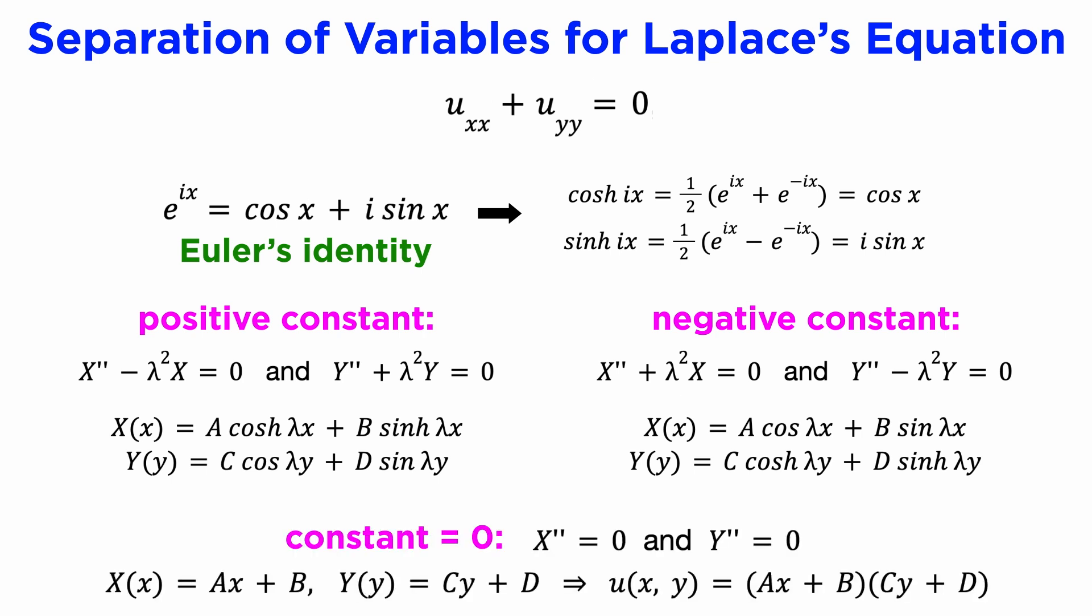We should also mention that it is possible to choose lambda equals zero as the separation constant, and this will give us solutions for x and y that are linear functions in x and y, but again, we should only do this if the boundary conditions make it possible for this to be a solution in the first place. Let's see an example of what we mean by this.